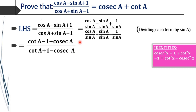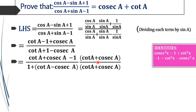In the next step, we are going to use a trick so that we can easily get our RHS as cosec A plus cot A. We multiply the numerator and denominator with (cot A plus cosec A) divided by (cot A plus cosec A).